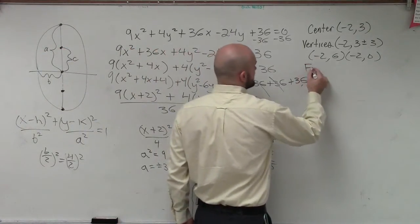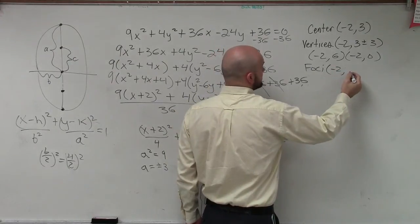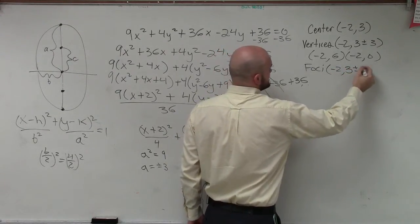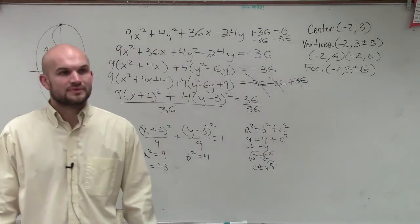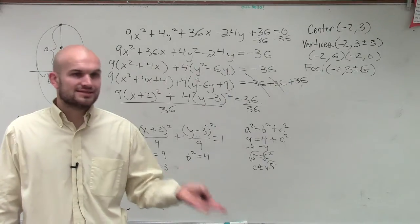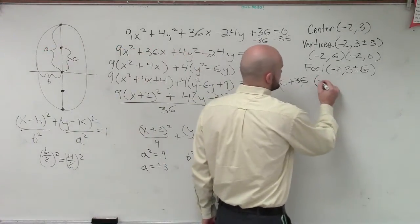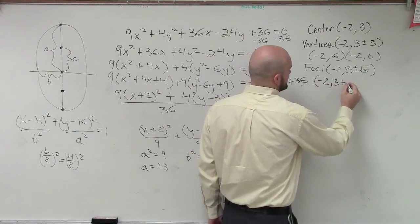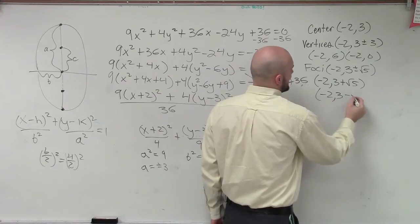Now to find the foci, it's going to be (-2, 3 ± √5). Now, I want you to separate into the both two foci's. But you can't simplify, I don't want you to give me a decimal approximation. So you'll just write (-2, 3 + √5) and (-2, 3 - √5).